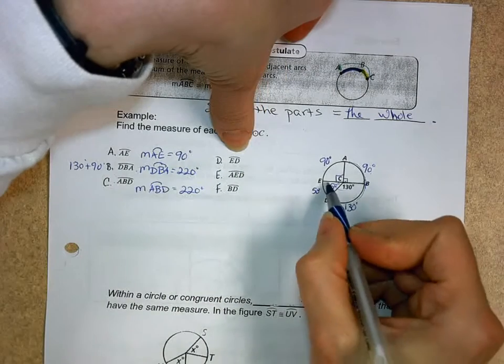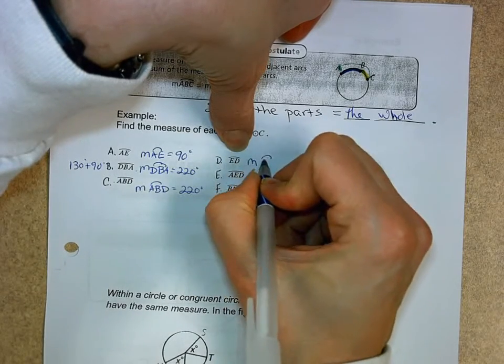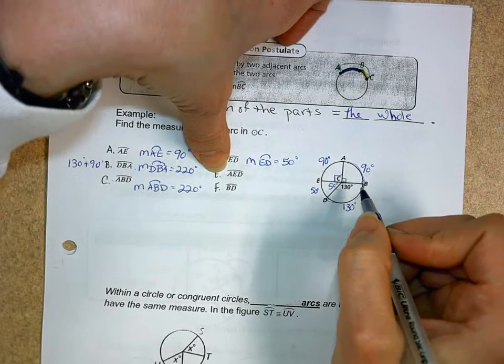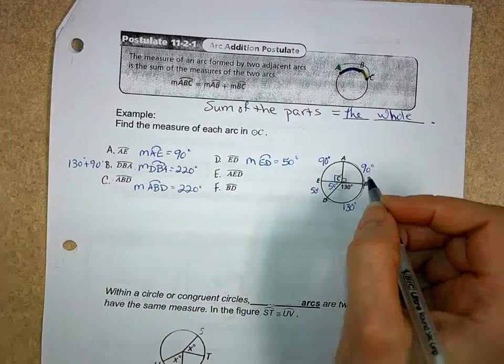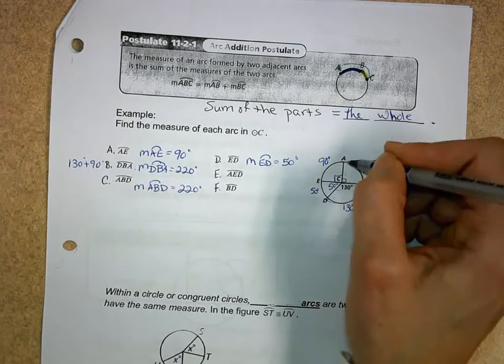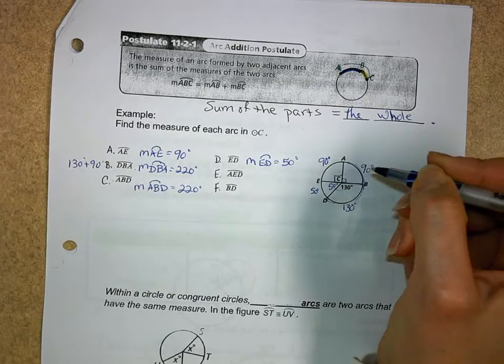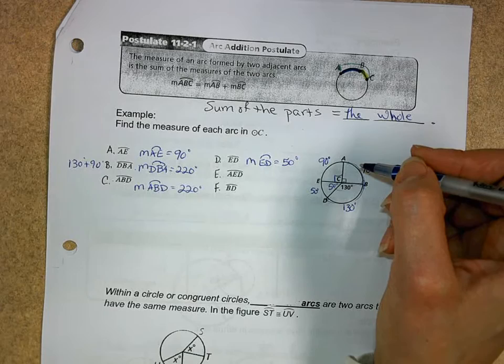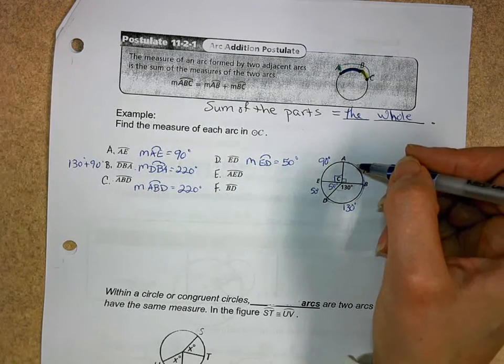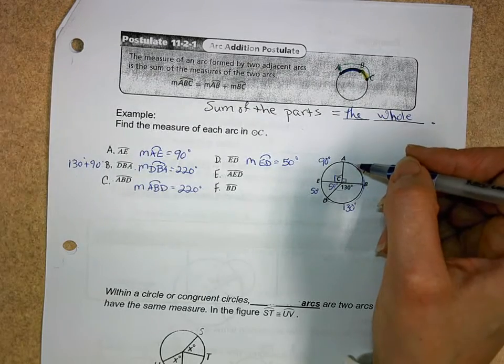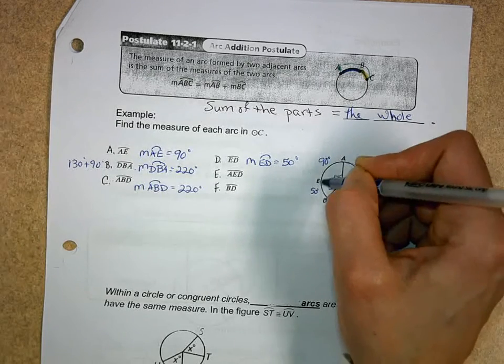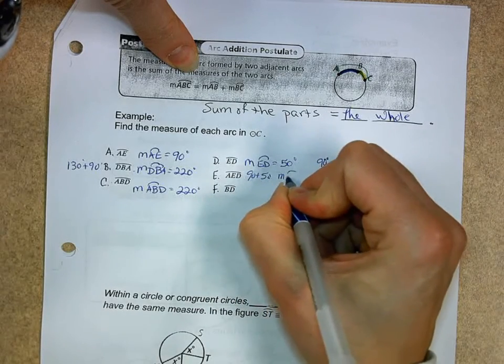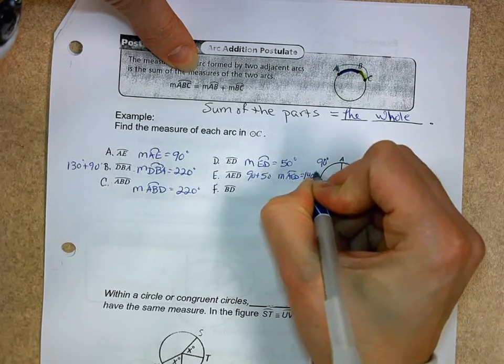What's the measure of arc ED? What did we find it to be? That's right, 50 degrees. Great job. How about arc AED? Now I know it's not a major arc or a semicircle and it's named with three points, but that just lets us know exactly where we're going to go. You can always name a minor arc with three, but normally we do just with two, but you always have to name a major arc or semicircle with three. So we have arc AED. Well, that's just going to be 90 plus 50. That's 140. So the measure of arc AED is 140 degrees.